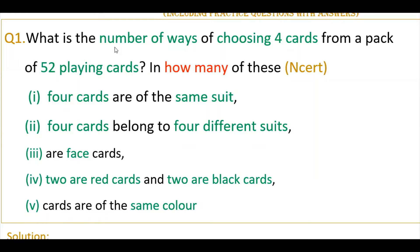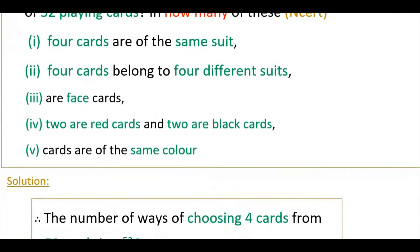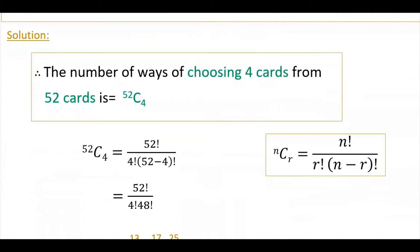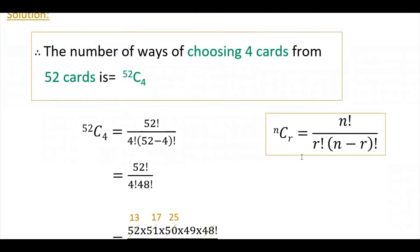Now moving to the question: what is the number of ways of choosing four cards from a pack of 52 playing cards? This is a direct question. The answer is 52C4. We know that nCr equals n factorial divided by r factorial into (n minus r) factorial. So 52C4 equals 52 factorial divided by 4 factorial into (52 minus 4) factorial.